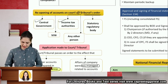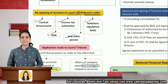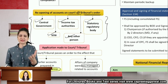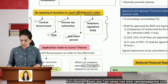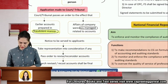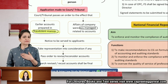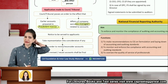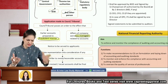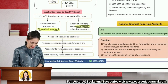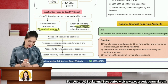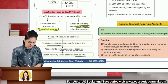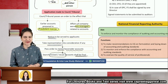The court or tribunal may pass an order if an application is made by the Central Government, income tax authority, SEBI, any other statutory or regulatory authority, or any other person. Notice will be served to the applicants. If they have any representations, those will be taken into consideration, and an order will be passed to either revise or reconsider the accounts. The accounts so revised or recast shall be considered final.